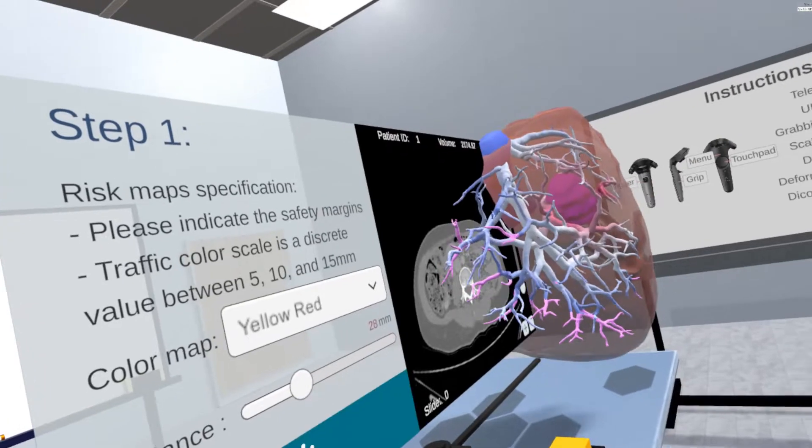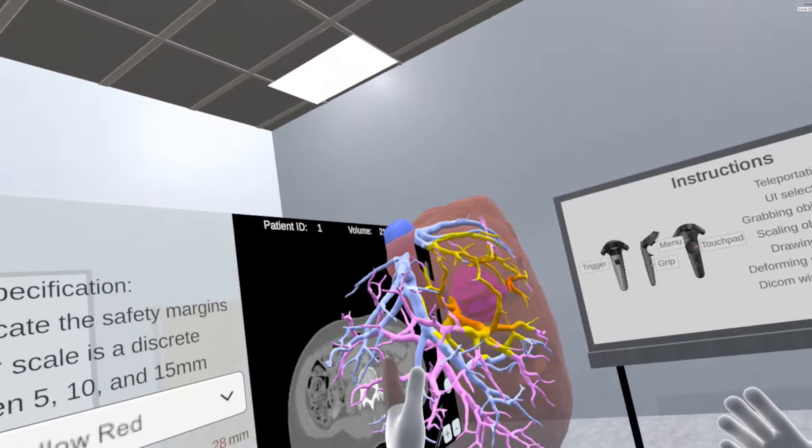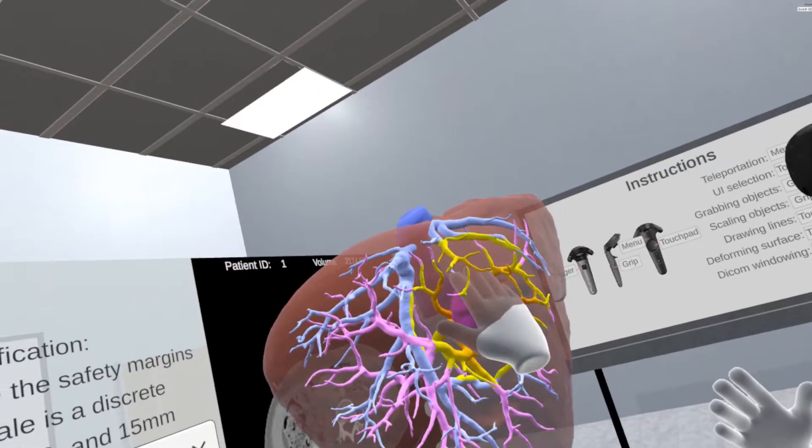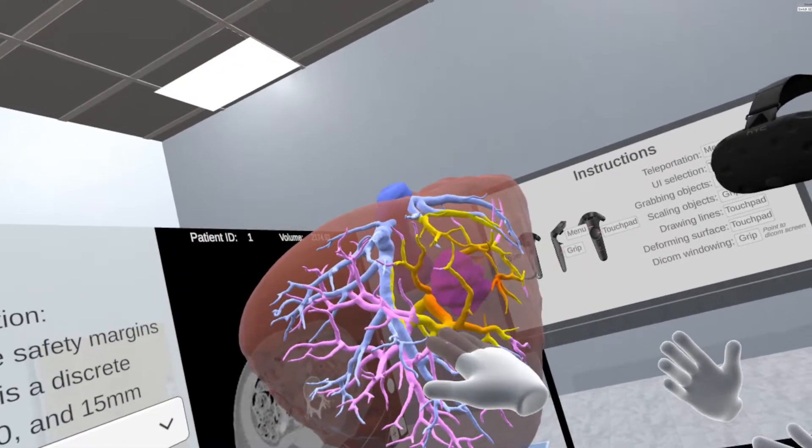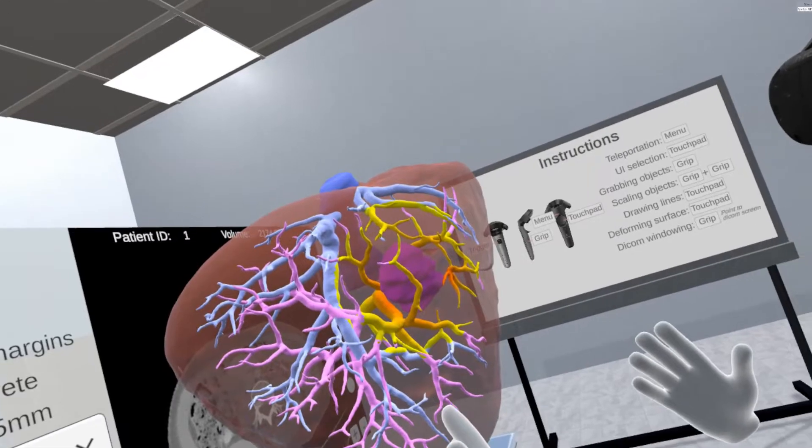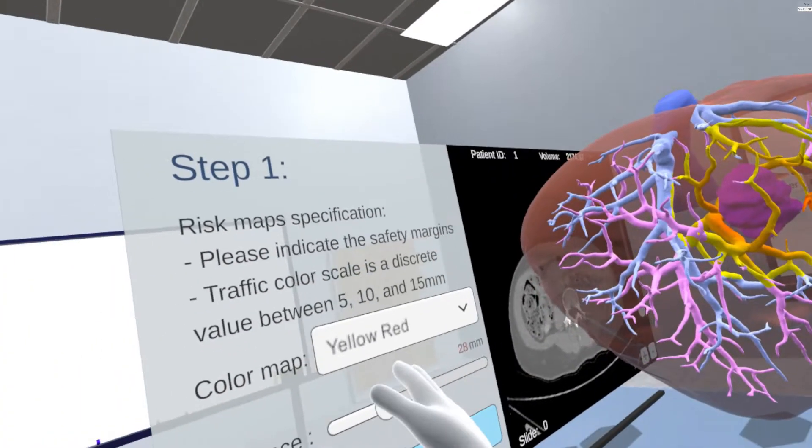Based on this visualization, the surgeons can evaluate the affected vessel systems and understand the potential resection. As default, we employ the risk maps visualization with a distance of 5, 10, and 15 mm around the tumors.